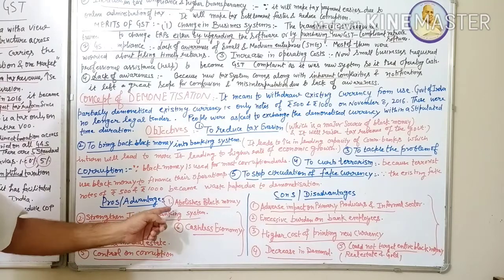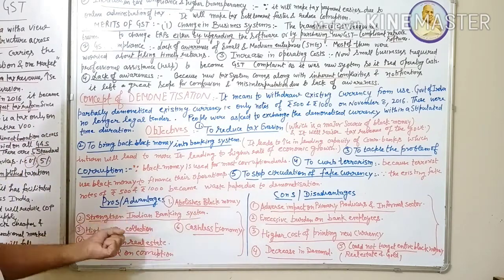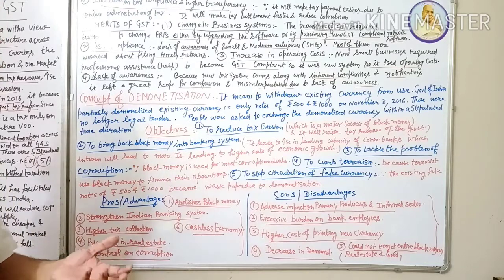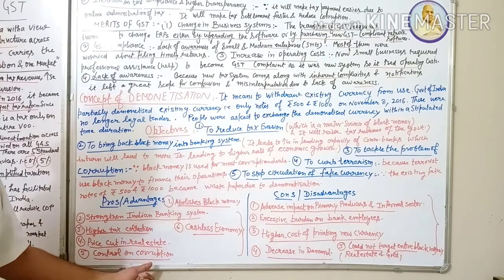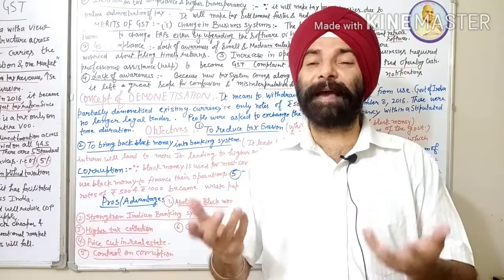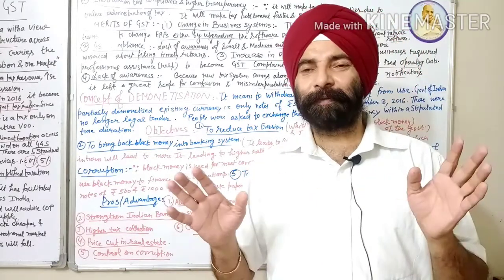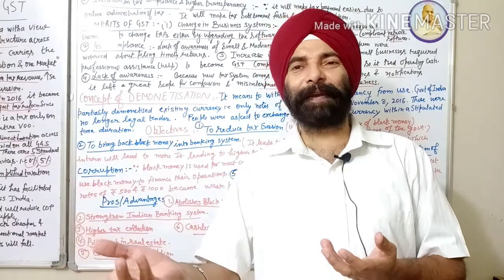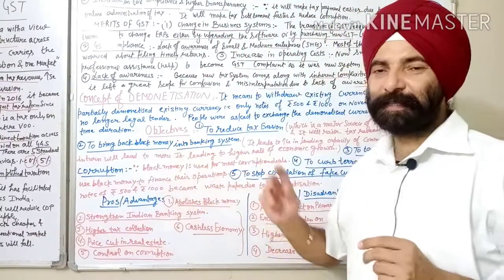Now briefly, the pros of demonetization: it abolished black money, strengthened the Indian banking system, increased tax collection, caused real estate prices to come under control, helped win against corruption, and most importantly promoted a cashless economy. Apps like Paytm and PhonePe enabled online payments — for utility bills and more — keeping everything on record, making it safer for consumers and banks alike.